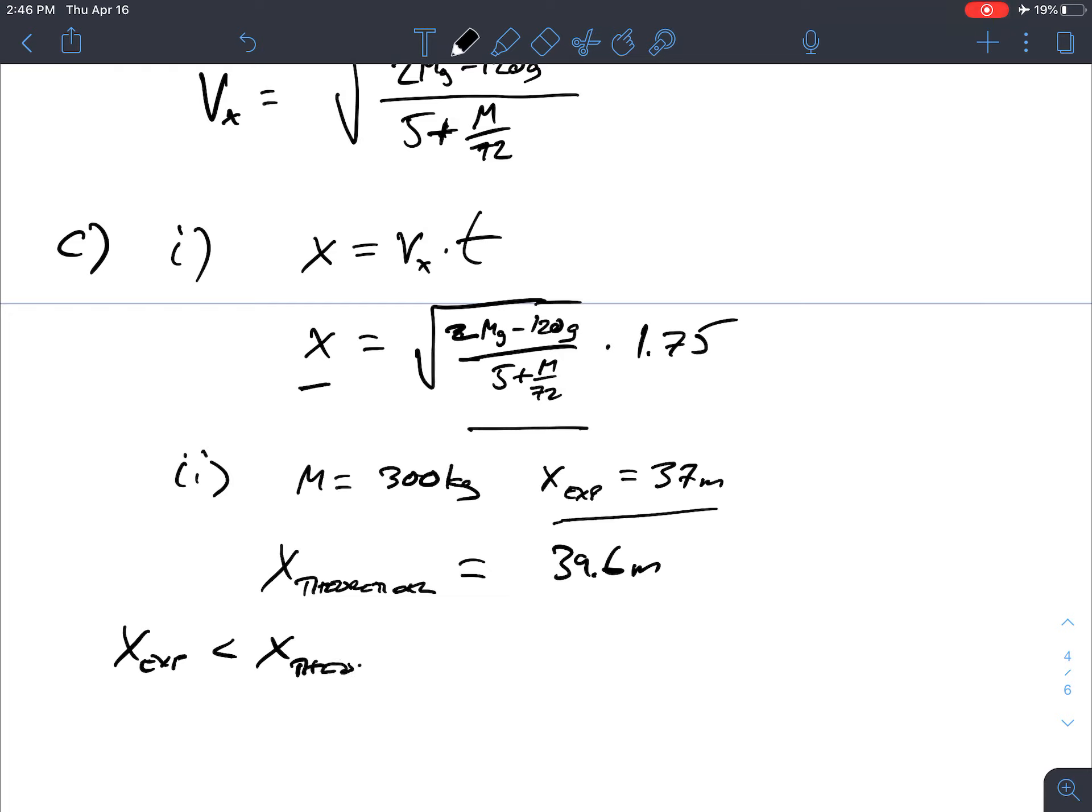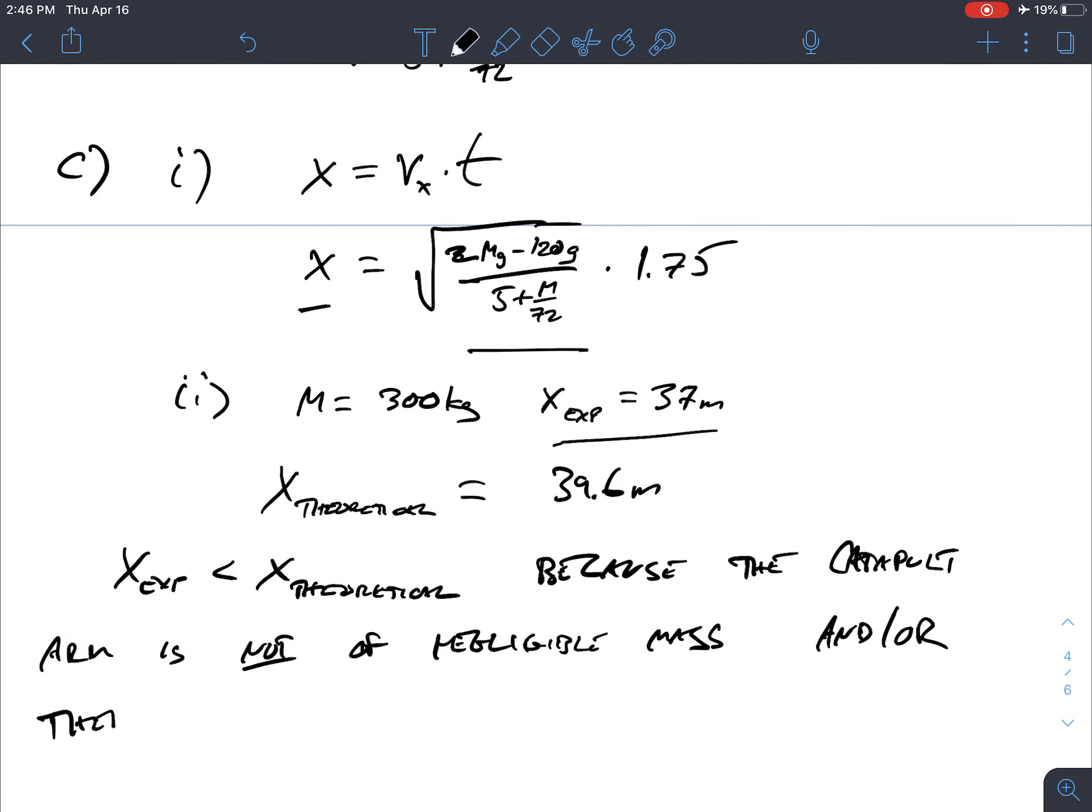Probably because the catapult arm is not of negligible mass, or you could also say that there's friction at the catapult axis, axle, whatever you want to call that thing. So those are both good explanations for why we would get a smaller experimental value than theoretical.